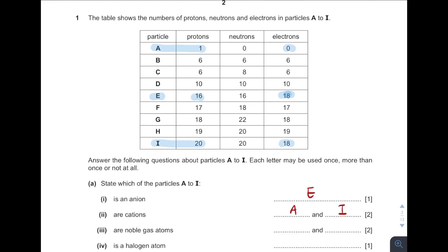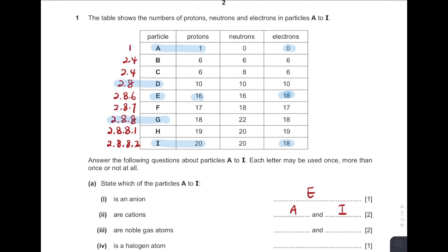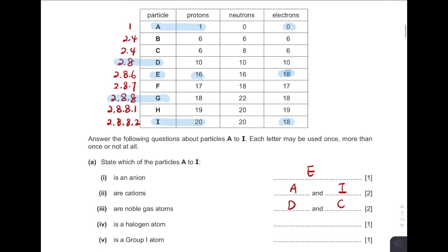Next — normal noble gas atoms. What are noble gases? Noble gases are all from Group 0, which means they have a stable electron arrangement. The outermost shell has the maximum number of electrons. So you can look for the electronic structures. One proton: one. Six means 2, 4. Ten: 2, 8. Sixteen. Seventeen. Eighteen: 2, 8, 8. Nineteen: 2, 8, 8, 1. Twenty: 2, 8, 8, 2. So which two are noble gases — those with the maximum number of valence electrons? So D and G.